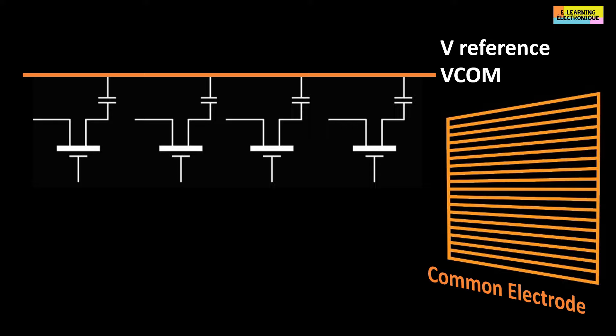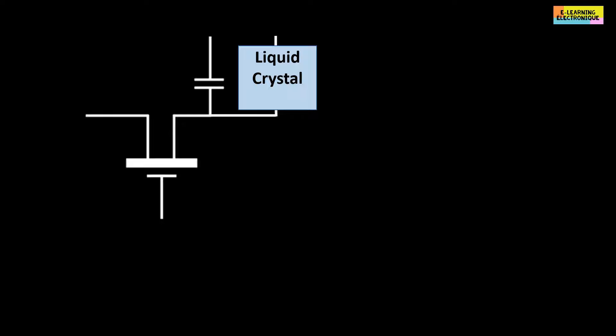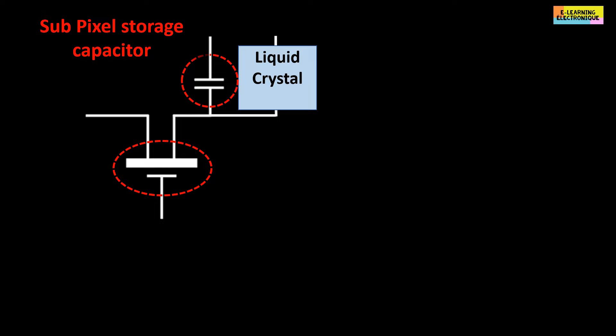Here is represented the equivalent circuit for a pixel in a TFT LCD screen. Are noted on the electrical diagram, the TFT transistor, the storage capacity of the sub-pixel and the liquid crystal. The latter is noted as a capacitor.